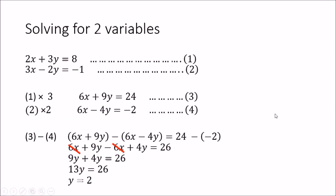The coefficient of x in the first equation is 2, and in the second equation it is 3. If we multiply the first equation by 3, the coefficient of x becomes 6. We must also multiply the other terms accordingly. Then we multiply the second equation by 2, so that the coefficient of x is also 6 in that equation.